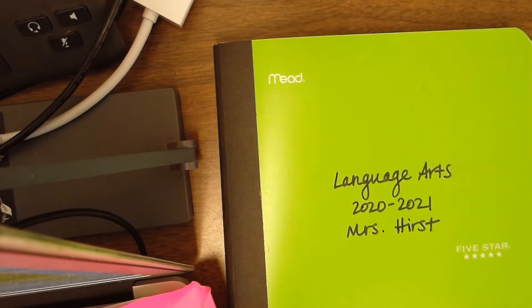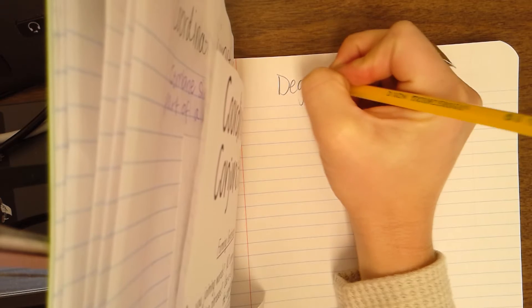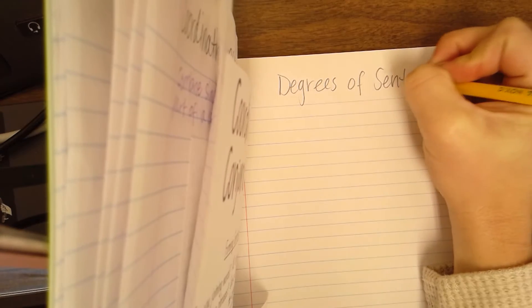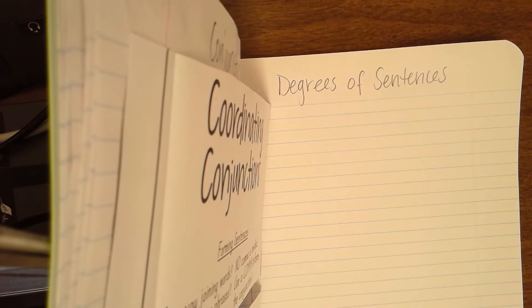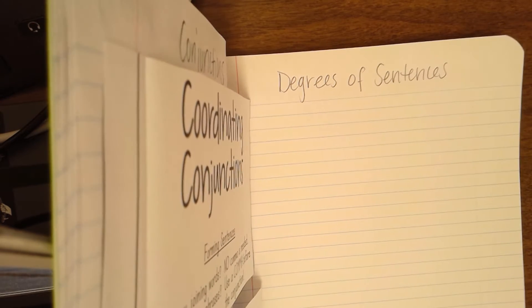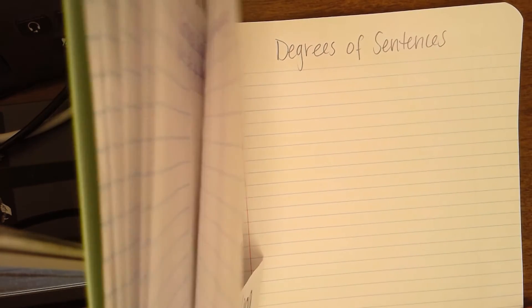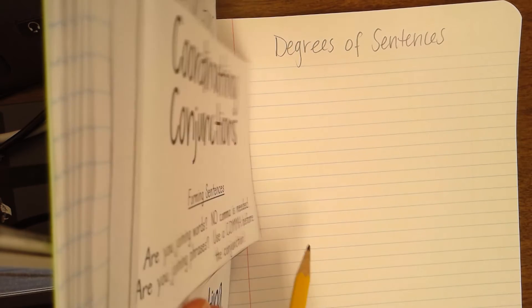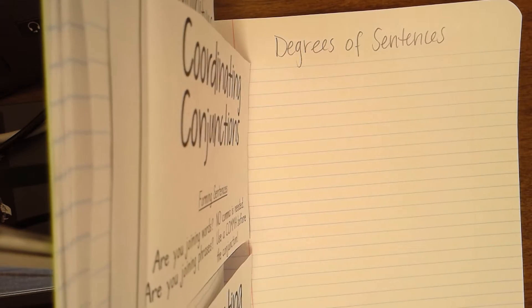Open up to the next available page in your composition notebook for language arts, and we are going to write the following title up at the top: Degrees of Sentences. Degrees of Sentences is our title. This page is just going to be notes — there's no foldable that's going to be cut out and glued onto it. I changed the title from 'types of sentences' because we already have a title called that, and these are a different way of looking at types of sentences, so I'm labeling it 'degrees of sentences.'